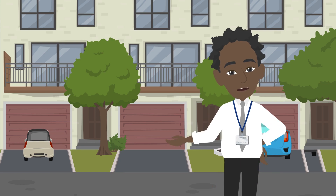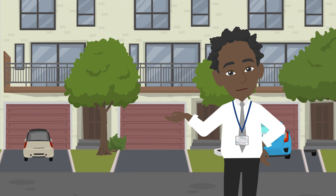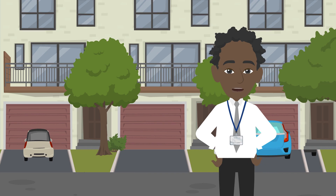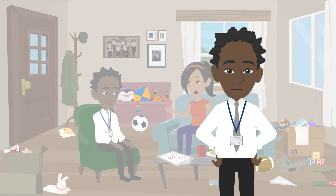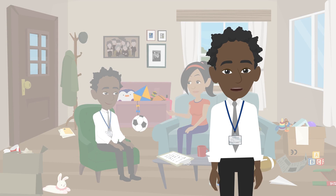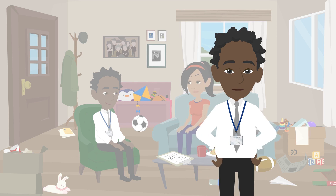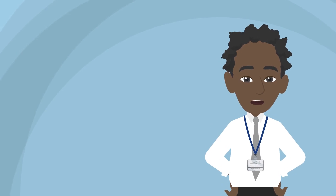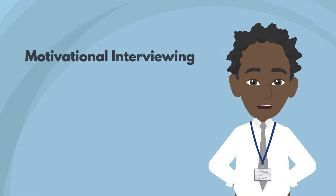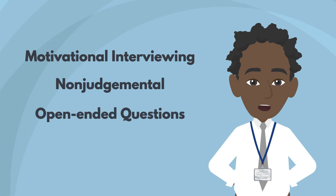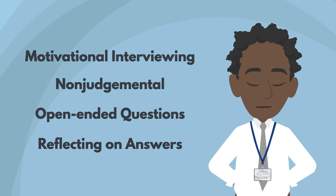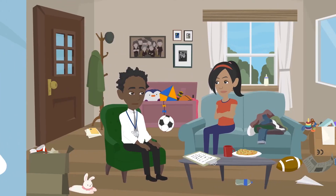Miranda was surprised to learn she had been referred to child welfare and said she hadn't neglected her children. Her response was reserved, but I spent time building rapport with her, asking about Carter and Adrian and talking about being a new mom. Miranda showed me the apartment where I observed some clutter and very little food. I explained the role of child welfare and the family safety and risk assessment process, and Miranda agreed to answer some questions. Using a motivational interviewing approach — remaining non-judgmental, asking open-ended questions, and reflecting — helped her feel comfortable talking.